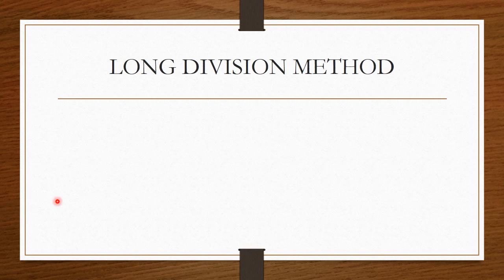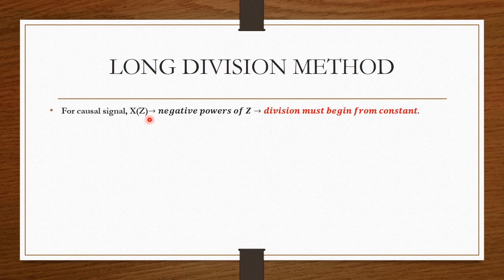Before solving the problem, we should remember some important properties — then only we can solve the problem easily. The first thing to remember is: for a causal signal, if X of Z is expressed in negative powers of Z — meaning Z to the power minus 1, minus 2, minus 3, and so on — then division must begin from the constant.